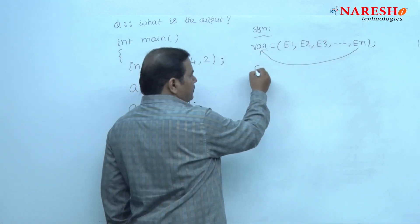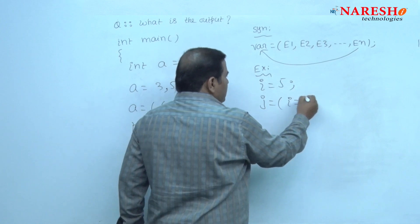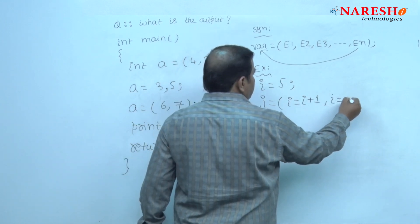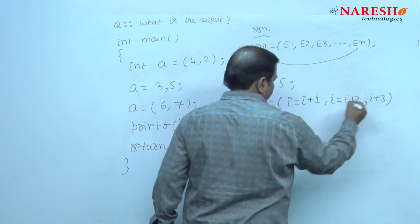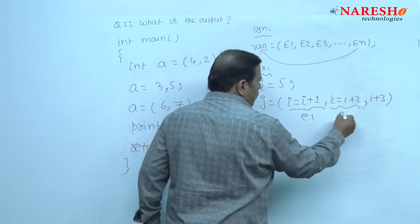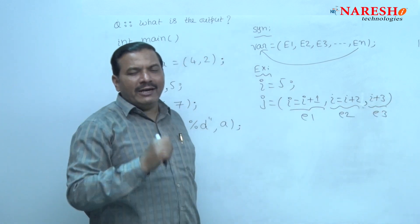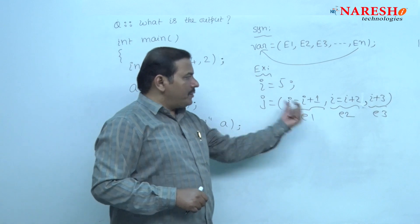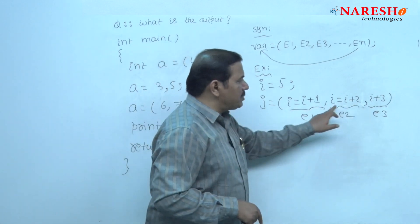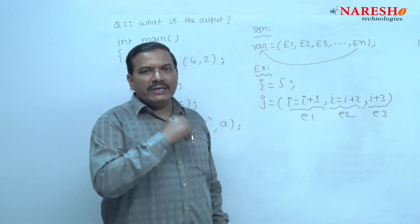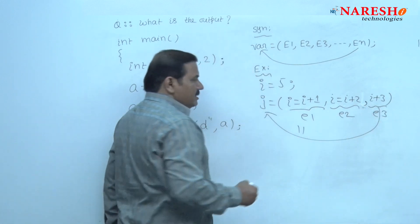As an example, consider the value of i is 5, and j is assigned: first expression is i = i + 1, second expression is i = i + 2, and third expression is i + 3. All these expressions are evaluated left to right. Since the initial value of i is 5, after expression 1, i becomes 6; then 6 + 2 gives i = 8; then 8 + 3 is 11. The rightmost expression value, i + 3, is 11, so 11 is assigned to j.